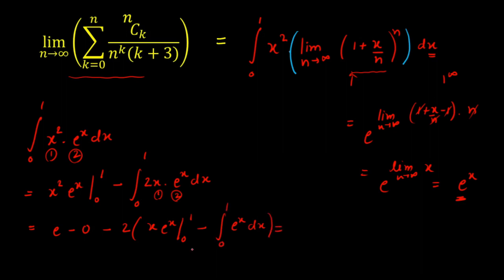Evaluating: x^2 e^x from 0 to 1 gives e. Then minus 2 times [x e^x from 0 to 1 minus e^x from 0 to 1], which gives minus 2 times [e minus (e minus 1)]. Simplifying: e minus 2 times [e minus e + 1] = e minus 2 times 1 = e minus 2. So the final answer is e minus 2, and that's a good place to stop.